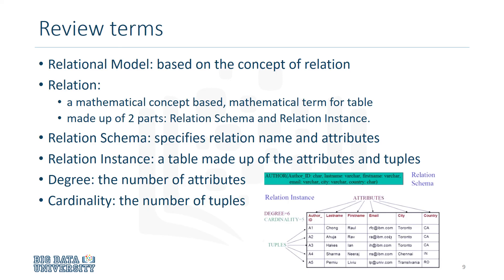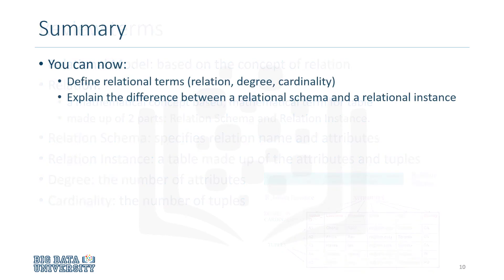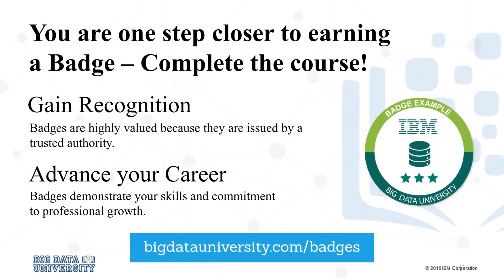Cardinality refers to the number of tuples or rows in a relation. You can now define the relational terms relation, degree and cardinality, and explain the difference between a relational schema and a relational instance. Thanks for watching this video.